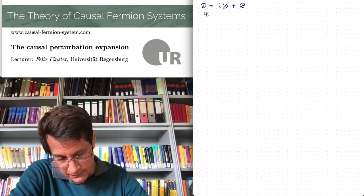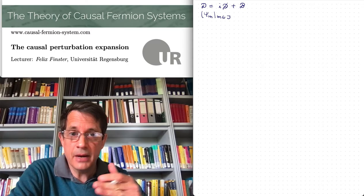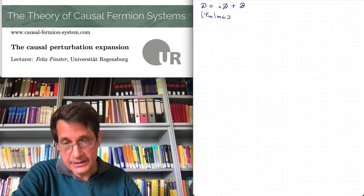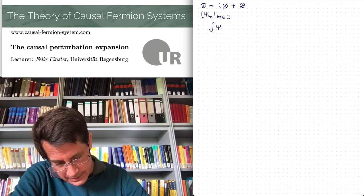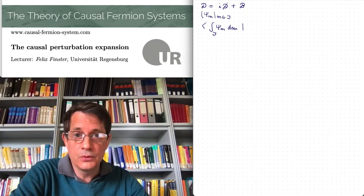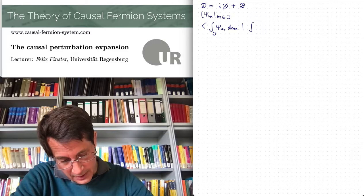In the construction of the fermionic signature operator, we considered families of solutions with a varying mass parameter, so the mass was in an interval I. We had families of solutions, then we integrated over the mass parameter, and this generated decay at infinity, making it possible to compute the spacetime inner product — the Krein inner product — with another family.